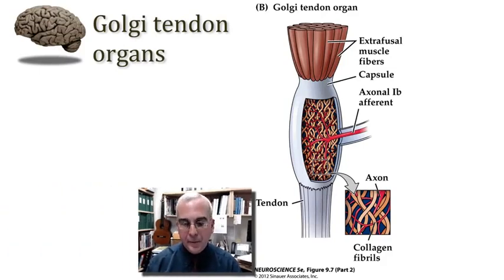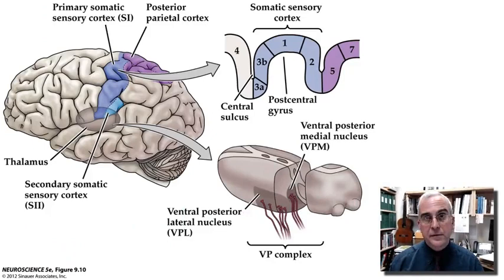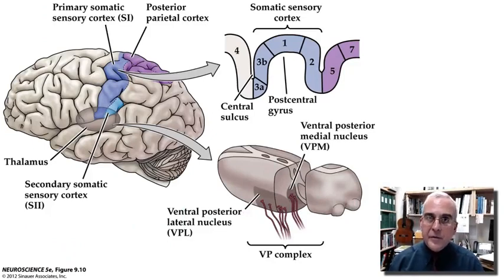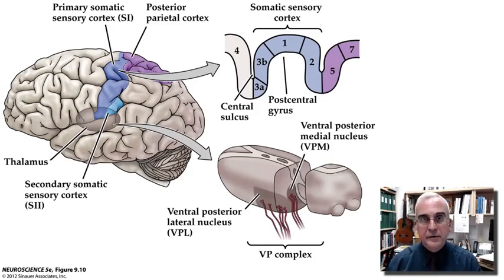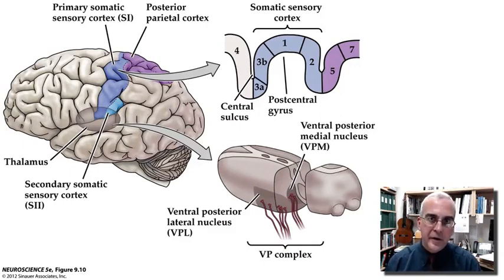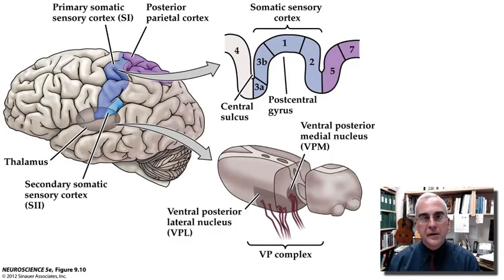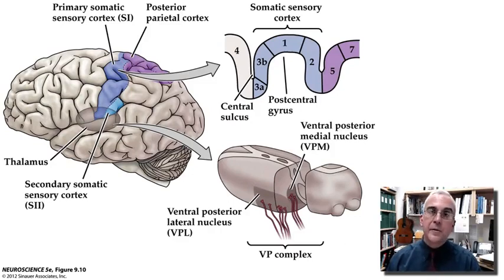Let's begin with talking about the somatic sensory division of the thalamus. There's a brief tutorial that talks about the thalamus to get you oriented to this part of the forebrain. The thalamus is derived from the diencephalon, which is part of the forebrain — the prosencephalon — and it's the more dorsal posterior part of the diencephalon, with the hypothalamus being more ventral and anterior. The thalamus is divided into a number of nuclei.